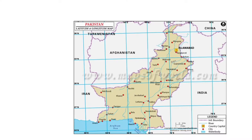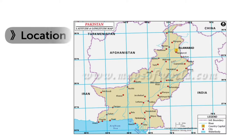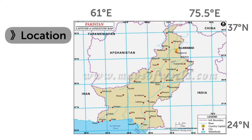In geography of Pakistan, the first topic point we discuss is absolute location of Pakistan. Pakistan totally lies in the northern and eastern hemisphere, that is from 24 degrees north to 37 degrees north and from 61 degrees east to 75 degrees east, and it covers an area of 87.98 million hectares.